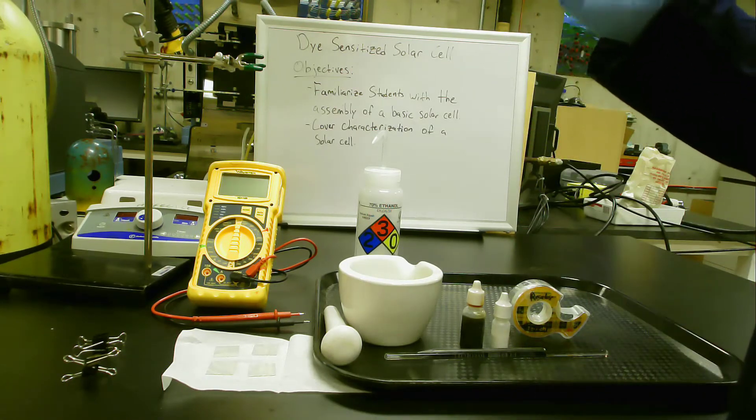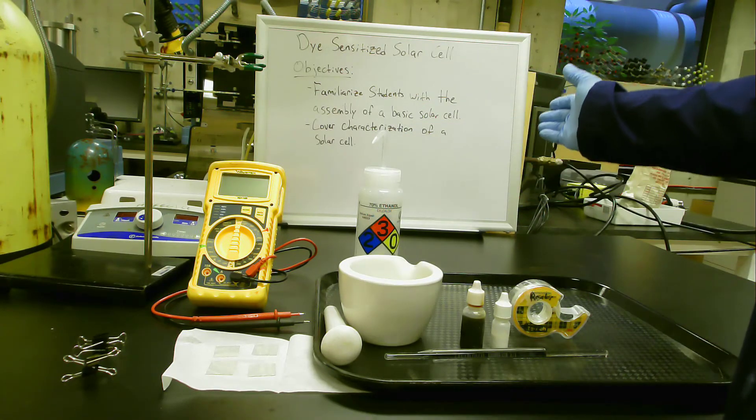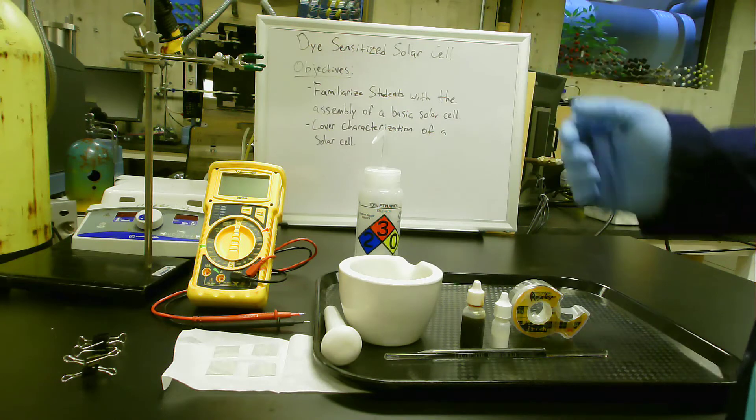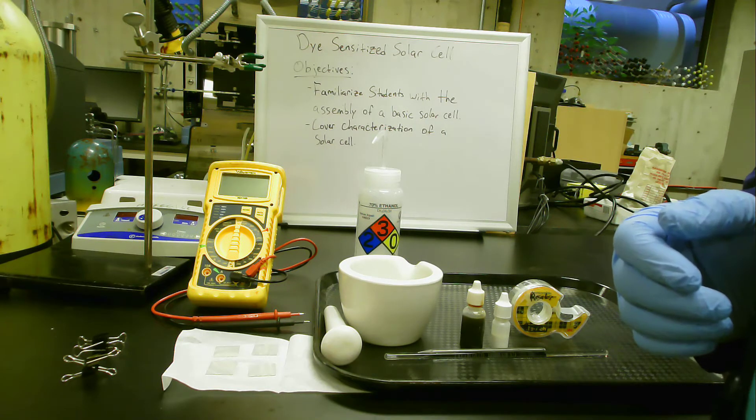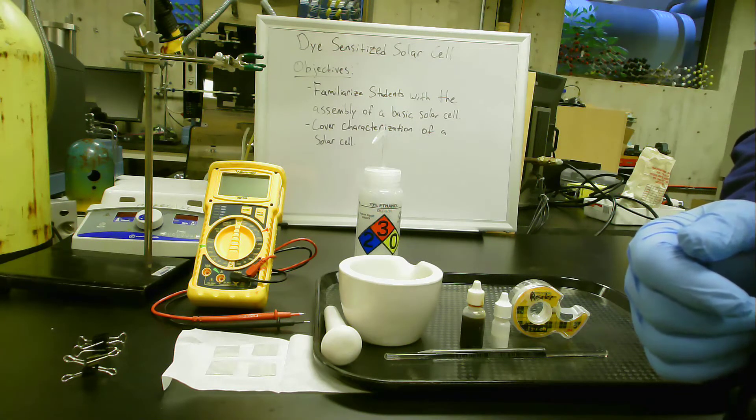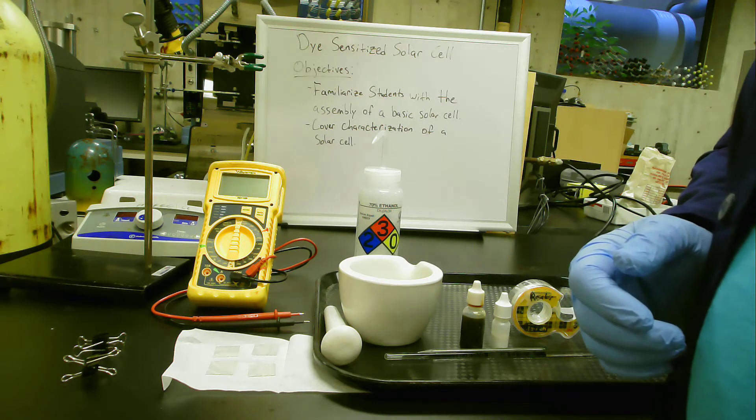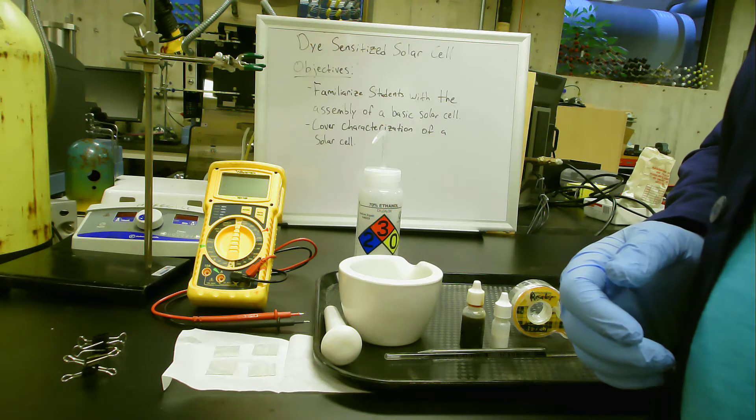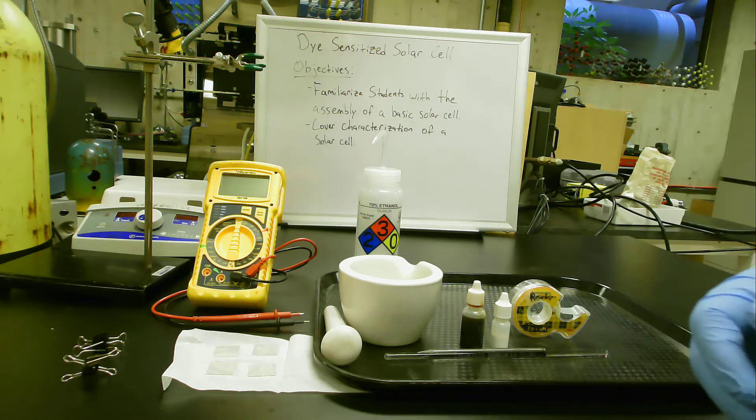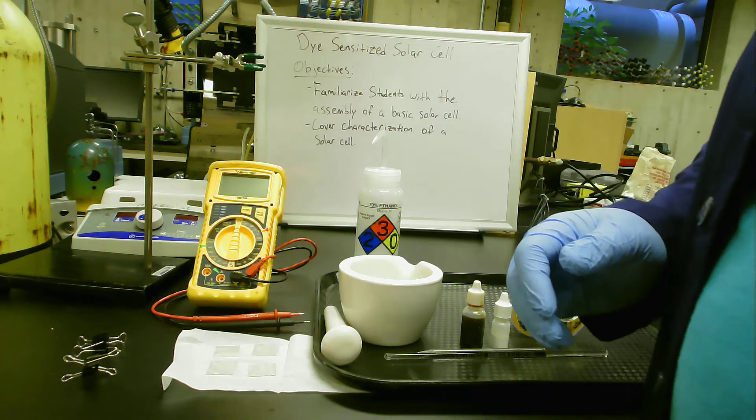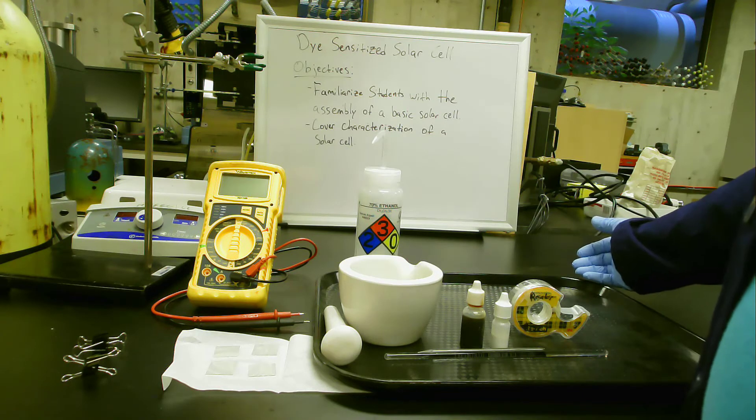Welcome to the Dye-Sensitized Solar Cell Objectives and Materials video. The purpose of this experiment is to familiarize students with the assembly of a basic solar cell. We're going to cover how to characterize a solar cell, which we will then apply to our cell and see how it stacks up against commercially available ones.